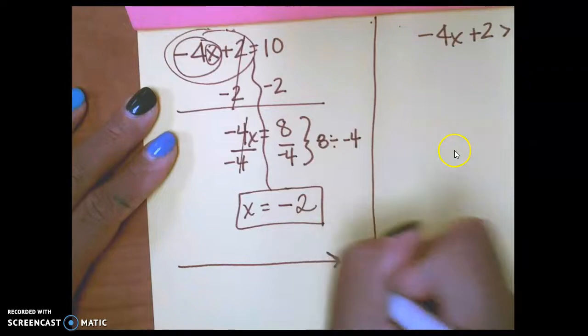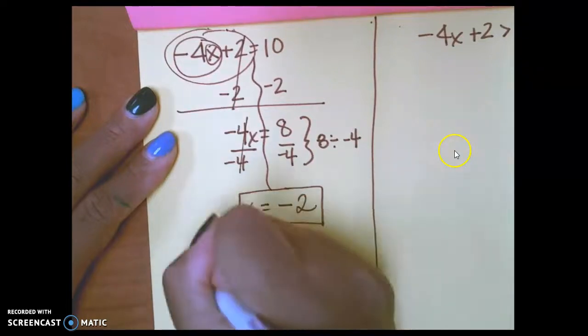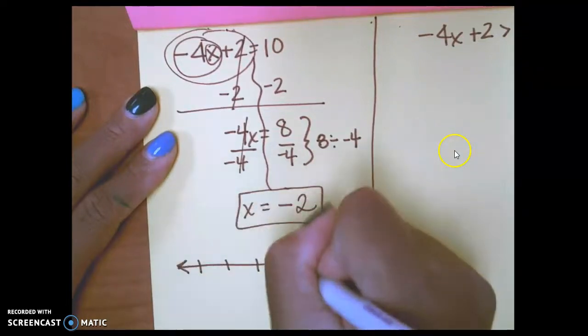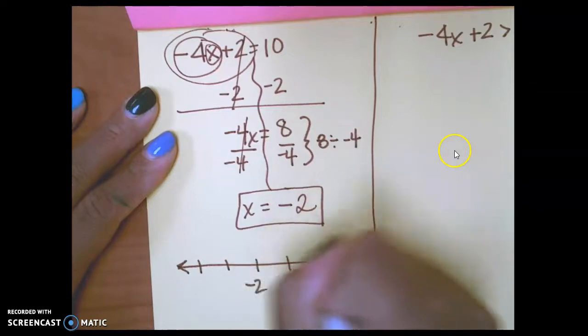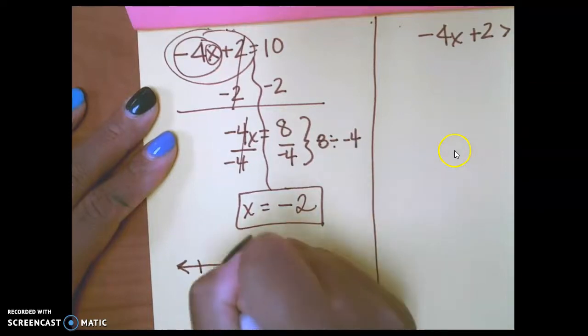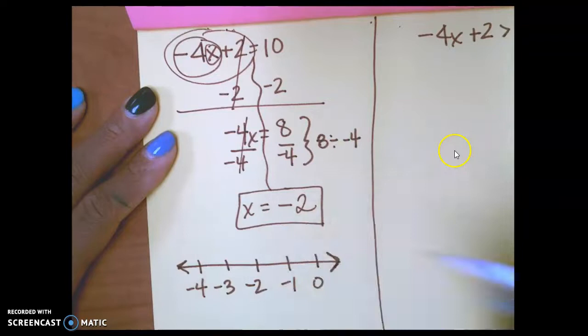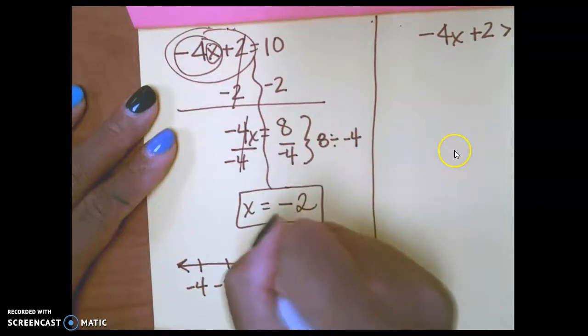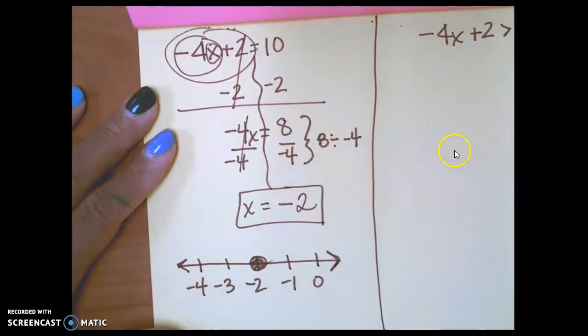Draw my number line. 5 tick marks. Negative 2, negative 1, 0, negative 3, negative 4. Shaded in. I'm done.